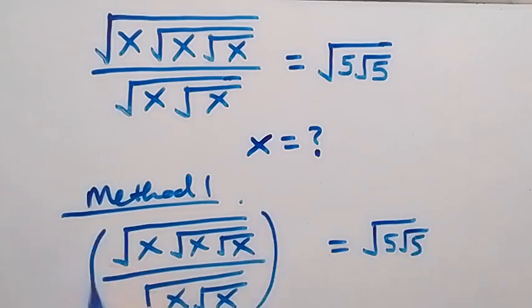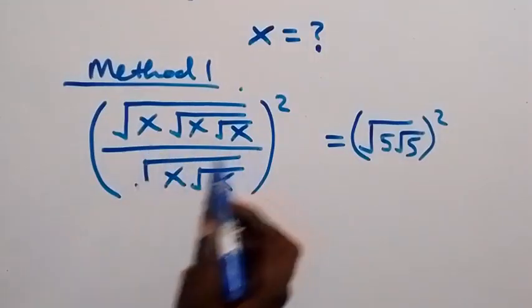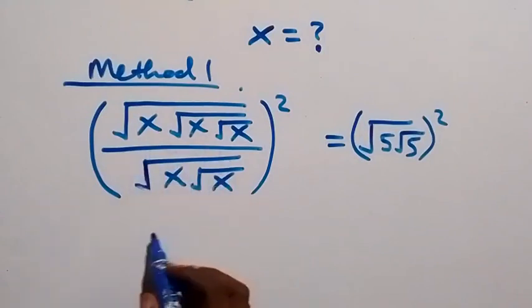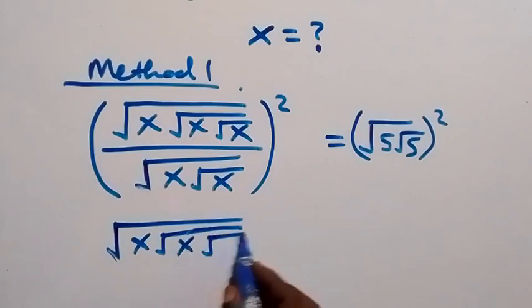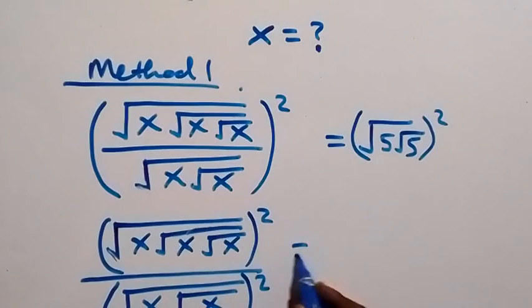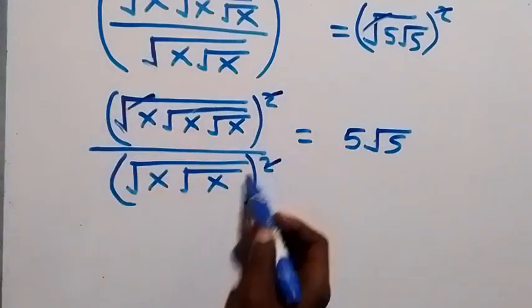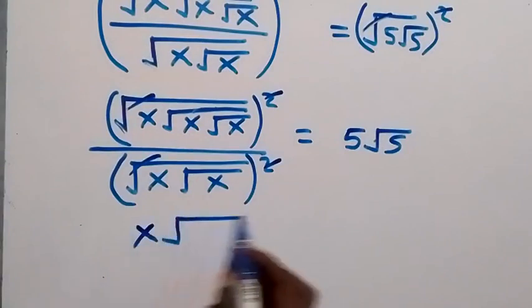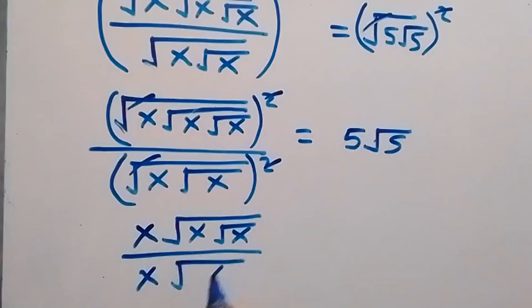From here, let's square both sides. We square this side and also this side. The square affects the numerator and the denominator, which we can write as root x times root x, then root x squared, divided by root x times root x squared. The square cancels the square roots, and we are left with x root x divided by x root x, which equals 5 root 5.